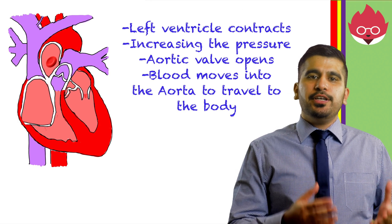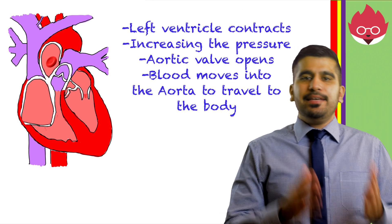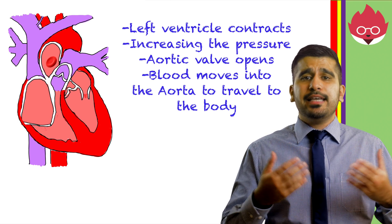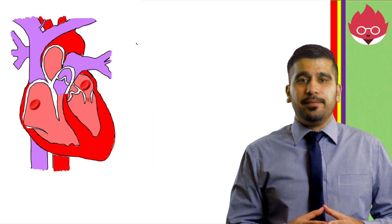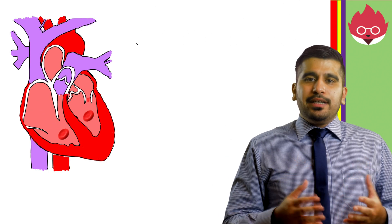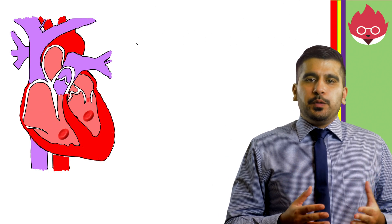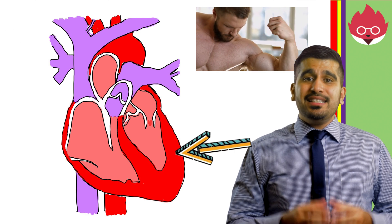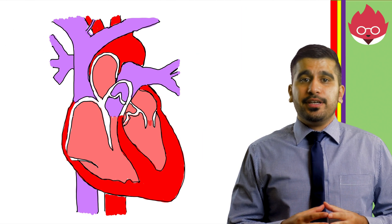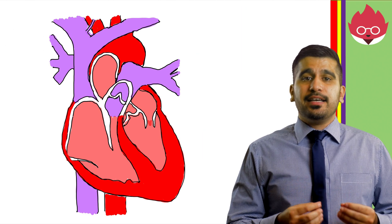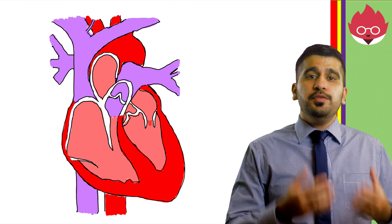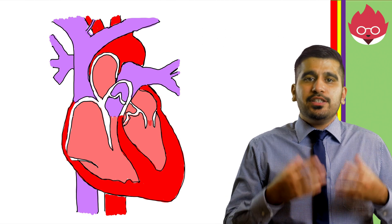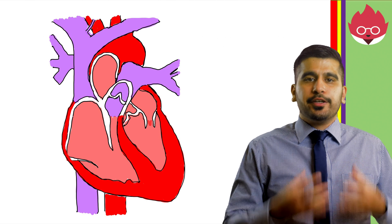Although we have described the journey of blood from the right to the left side, in reality blood is moving simultaneously through both sides of the heart. If you look at the left ventricle, you can see that the walls are more muscular than the right ventricle. This is an essential structural feature, as the left side of the heart is responsible for moving blood to the entire body, so it needs to generate a greater force during contraction.